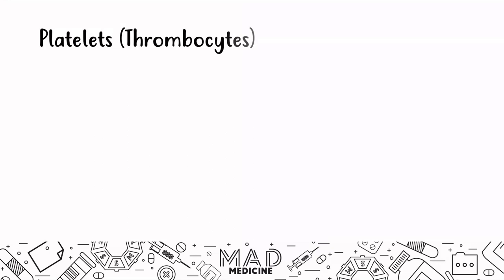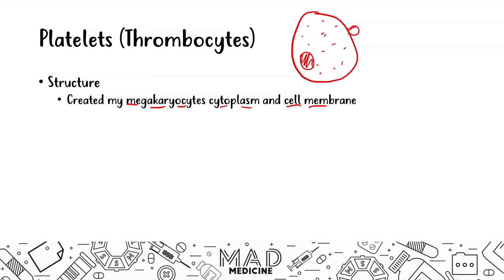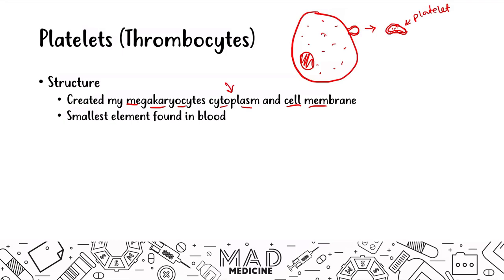When it comes to primary hemostasis and platelets, there are several things you need to know about both the structure and function of platelets. Platelets are created by cells called megakaryocytes — essentially, a platelet is a bleb of the cytoplasm and the cell membrane of the megakaryocyte. It's kind of like an exocytosed fragment. So the platelet is composed of the megakaryocyte cytoplasm and cellular membrane.